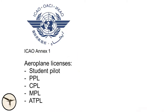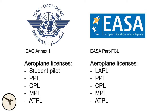According to ICAO Annex 1, there are five licenses: student pilot, PPL (private pilot license), CPL (commercial pilot license), MPL (multi-crew pilot license), and ATPL (airline transport pilot license). Not every aviation authority issues all of those licenses. One example is EASA, where the member states issue the following licenses: LAPL (light aircraft pilot license), which is a light version of a PPL with restrictions on weight and size of the aircraft, then PPL, CPL, MPL, and ATPL. EASA does not have a student pilot license; instead, the instructor issues a written authorization before each solo flight.